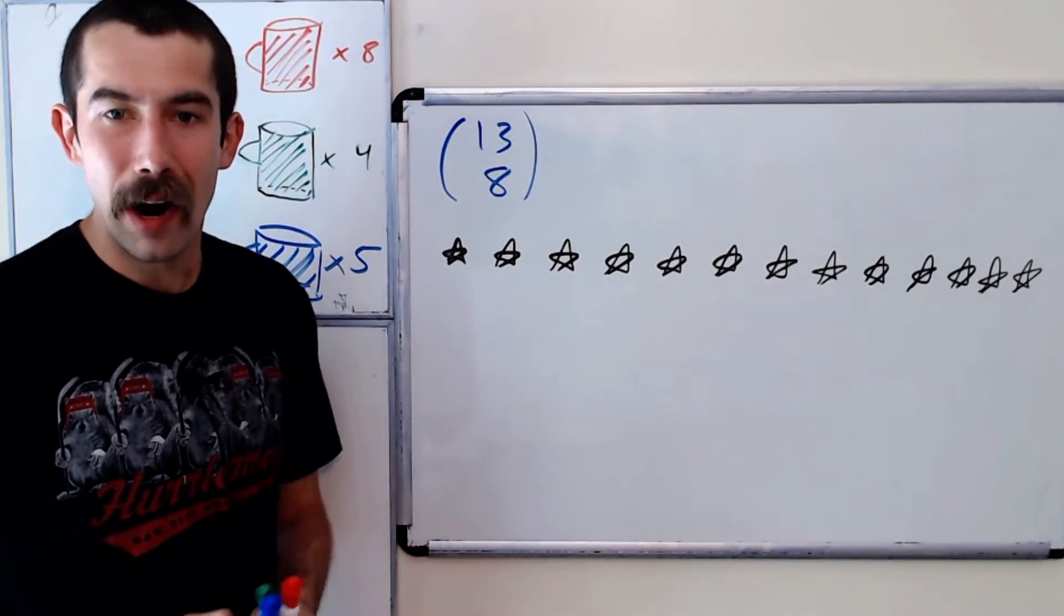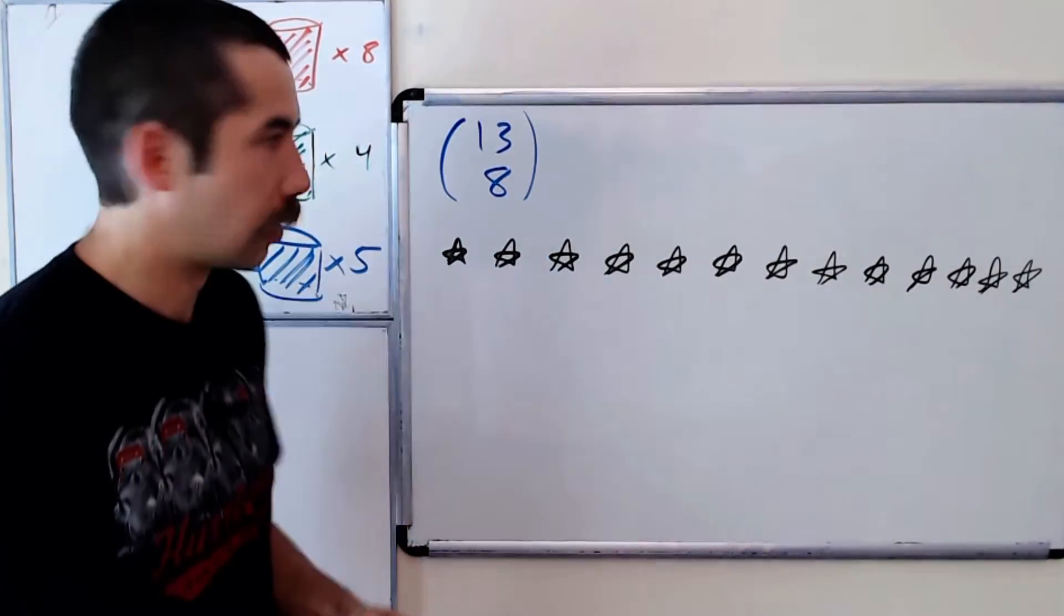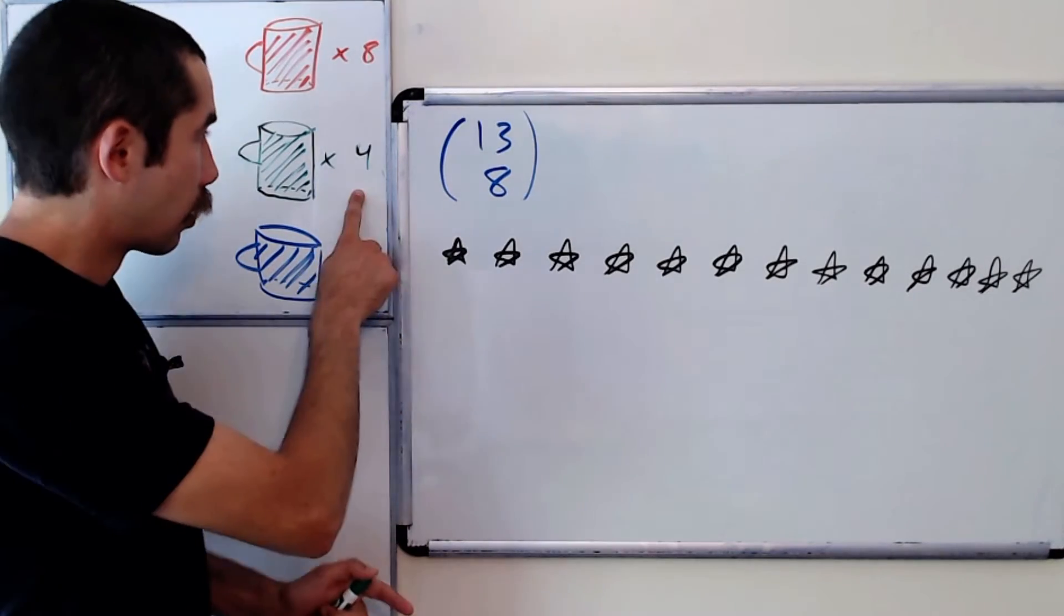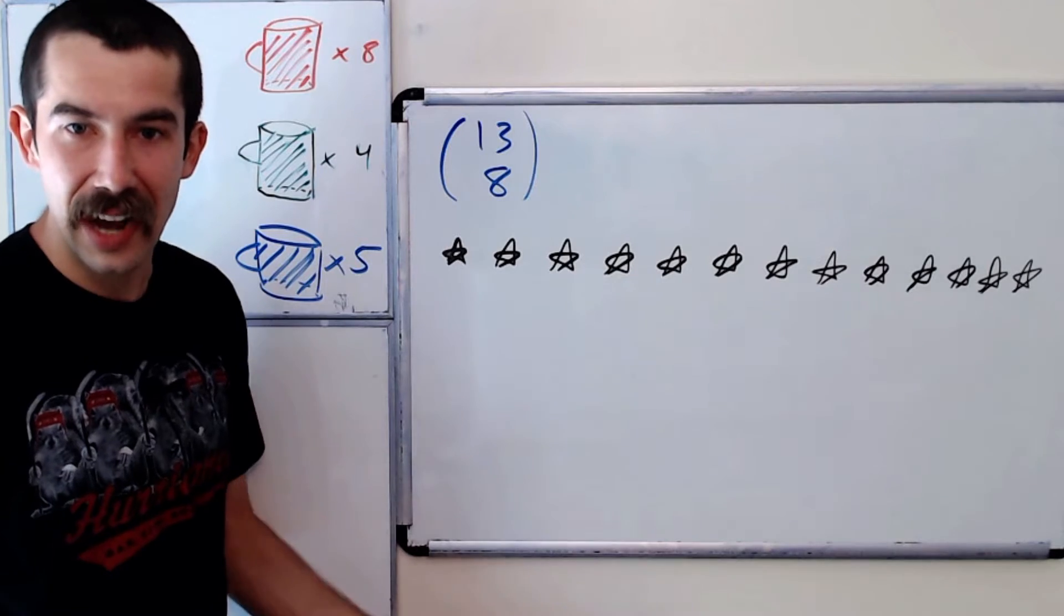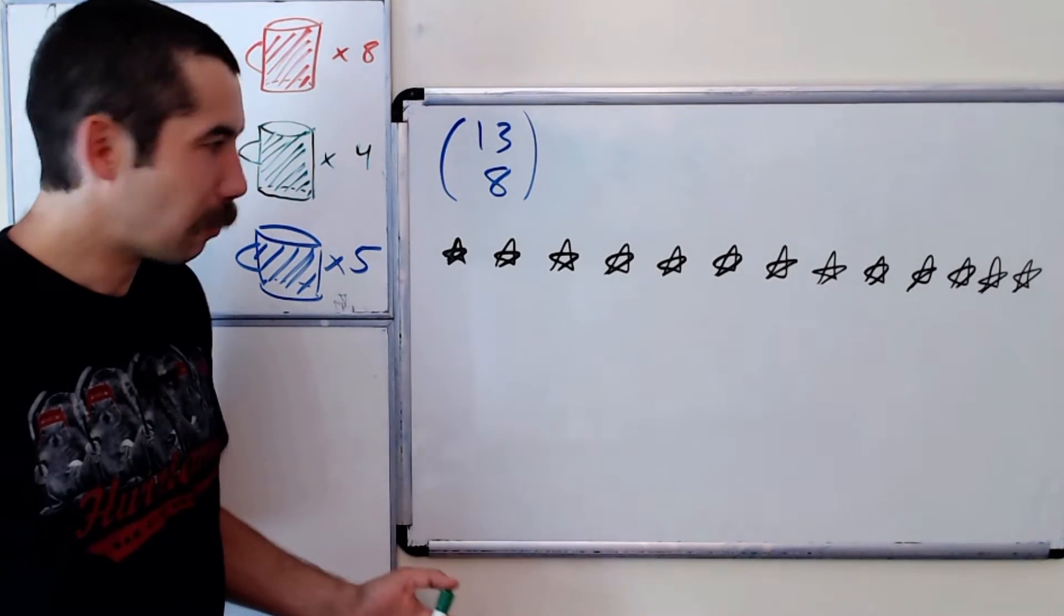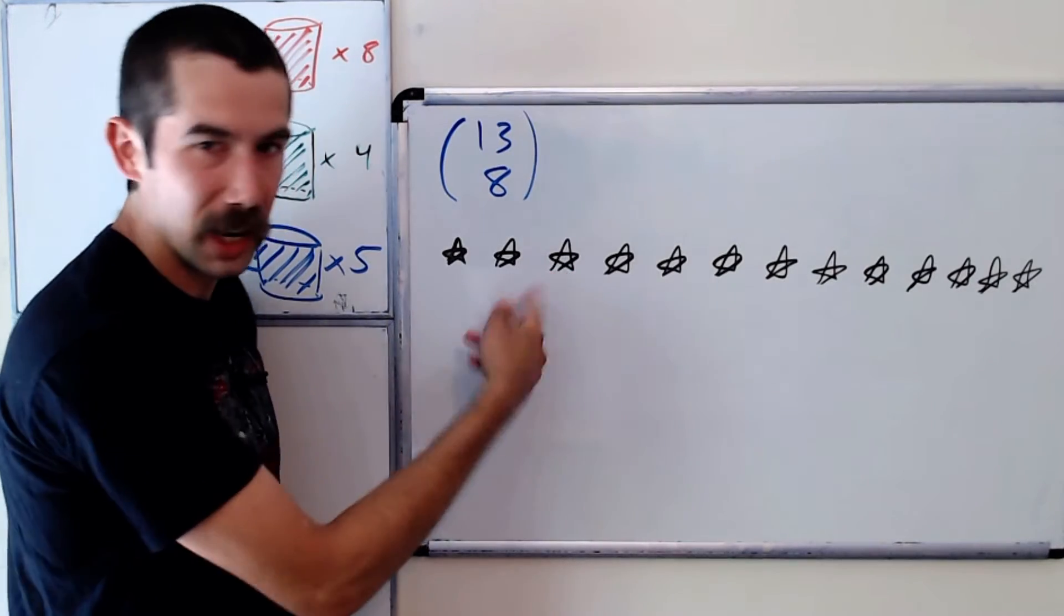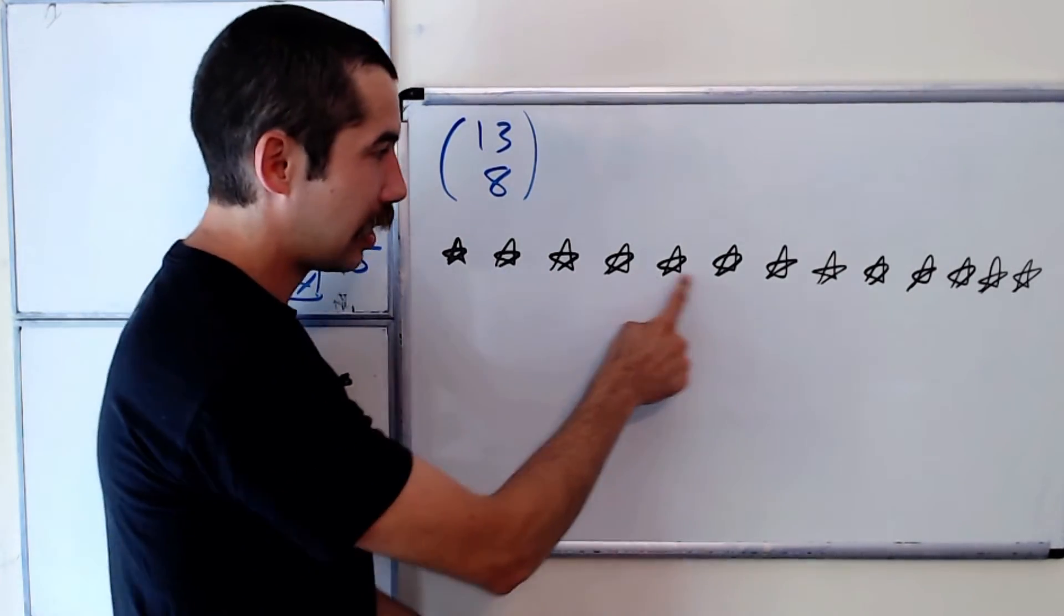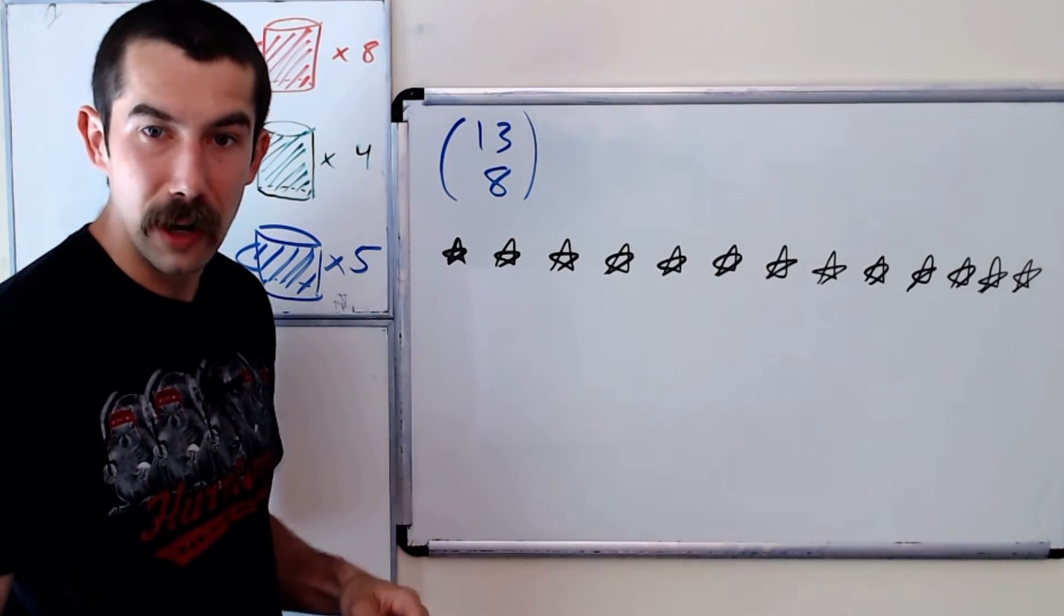And the question is, where can we place the green? And so we just have to make sure that there's no green next to green. Another way to say that is we can't put two greens between two of these mugs that we've already placed. We could put at most one green in between any of these two red or blue mugs.